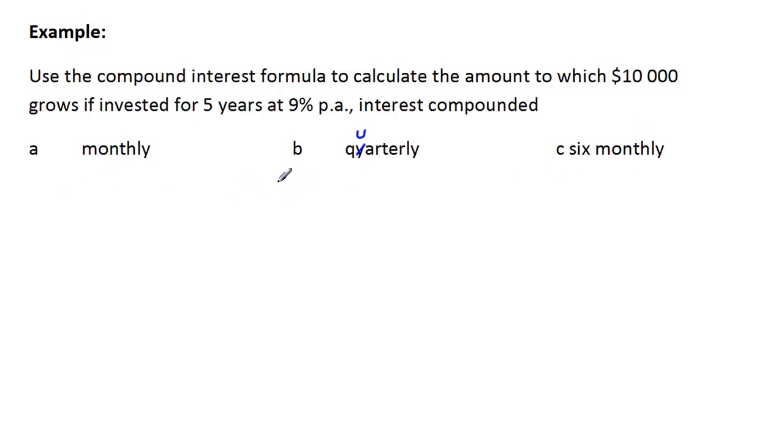Now remember that our formula stays the same. The amount of principal and interest at the end is A equals P, that's the principal, times one plus R over 100 to the power of N, where R is the interest rate as a percentage and N is the number of time periods. So the formula itself doesn't change, but there are two numbers that will change when we're compounding more than once a year.